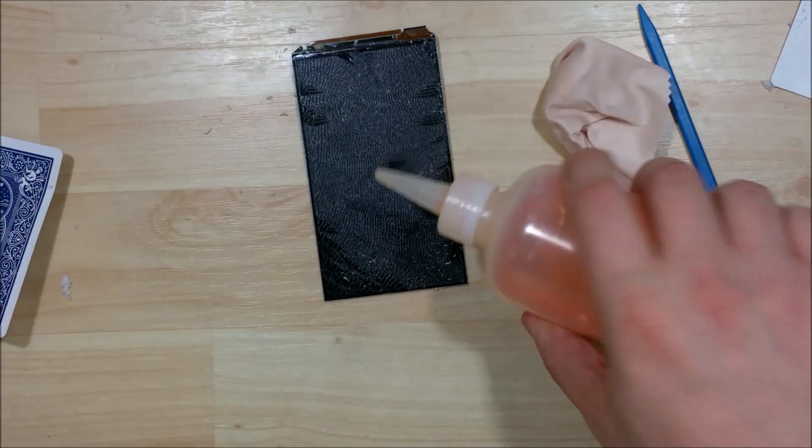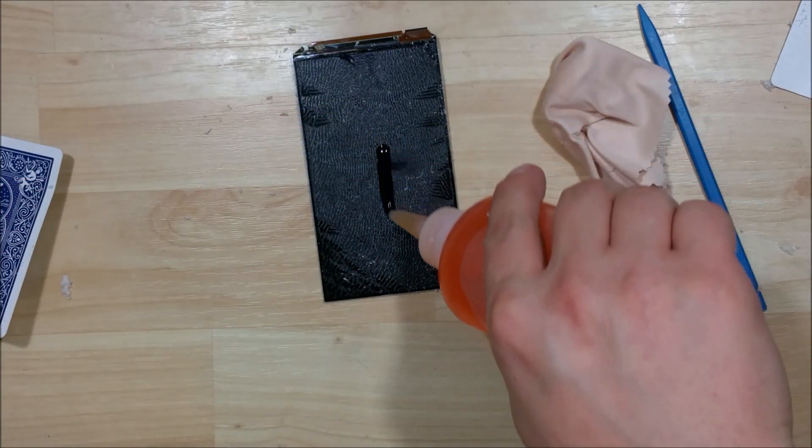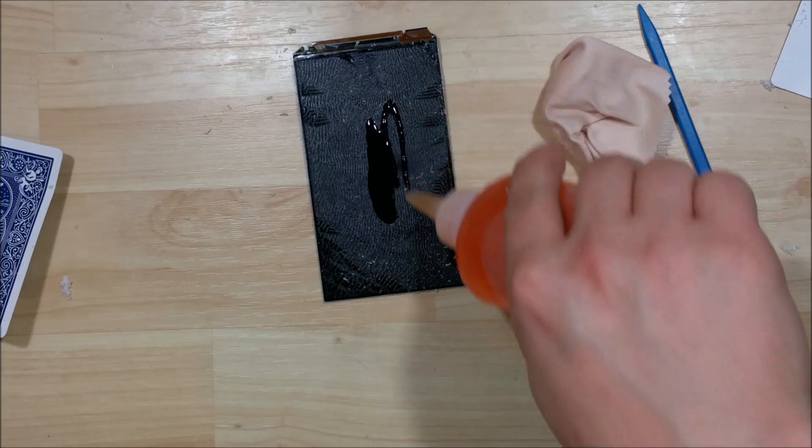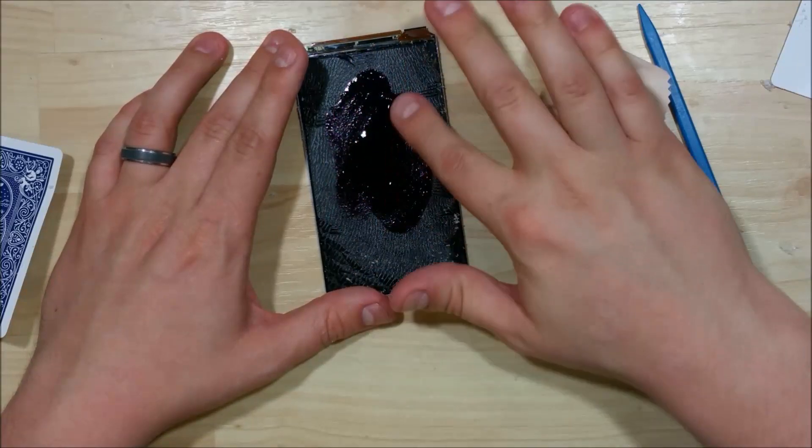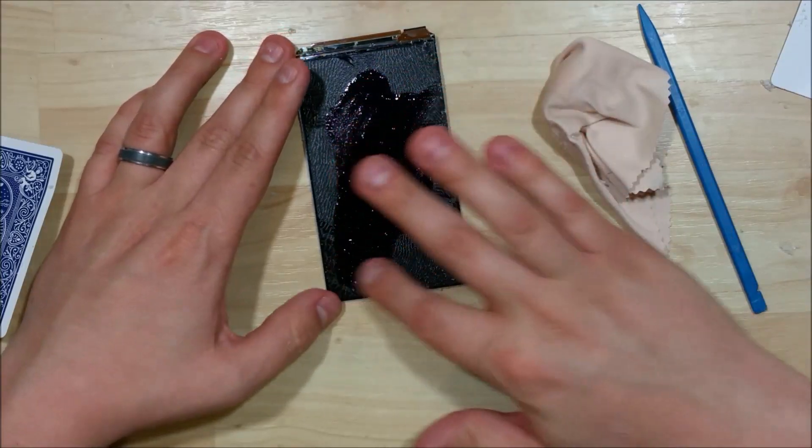So this Goo Gone here, this orange stuff, will help dissolve this Loca a little bit quicker. It will make your display smell orange. So what you want to do is make sure you clean it thoroughly before you go to the next step.